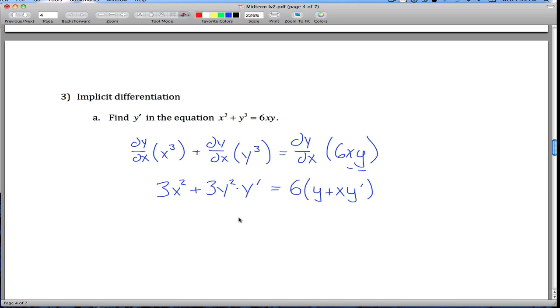so you get this big mess, if we leave this side alone, but distribute this 6 through, we get here, which is a point where we can collect all the terms with y primes on them on one side, and move all the terms without y primes in them on the other side.